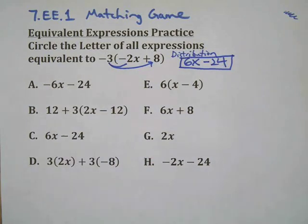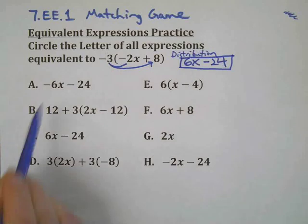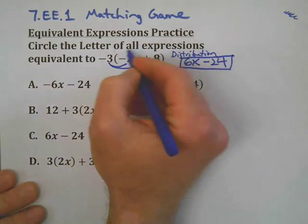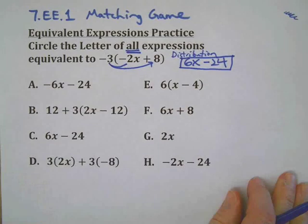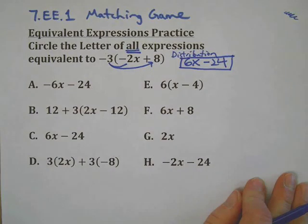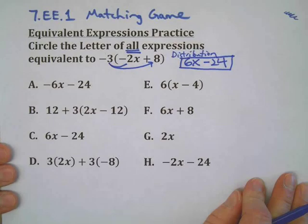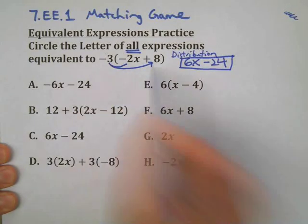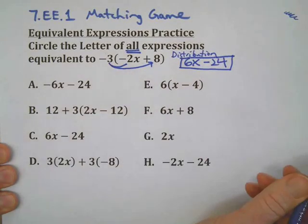A problem like this may show up on a standardized test. You're going to take each one of the choices and circle all the ones that match. This will have more than one correct choice — it might have none, it might have all of them — so you actually have to go through each one. It's like eight problems in one, but it gets you very well practiced in distribution and comparison.